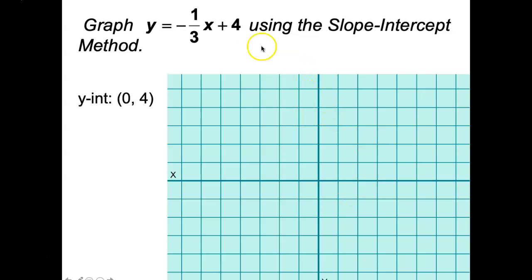It's easier to start with the y-intercept. So identify it should be 4 or 0, 4. So I'm going to plot the 4 over here. 1, 2, 3, 4. That's the first point.